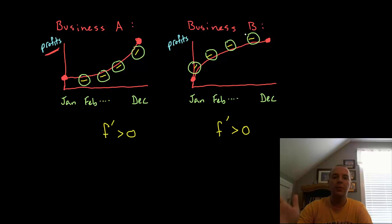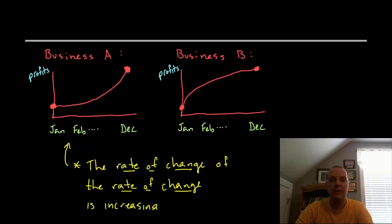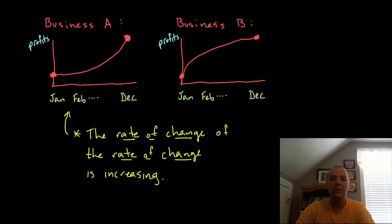Even though the slopes are positive, they're growing at a decreasing rate. I'm not saying the profits are decreasing, I'm saying they're continuing to grow at a decreasing rate. The subtle difference in these similar graphs that both have positive slope is the issue of concavity. With business A, the rate of change of the rate of change is increasing. These profits are growing at an increasing rate, whereas B's profits are growing at a decreasing rate.